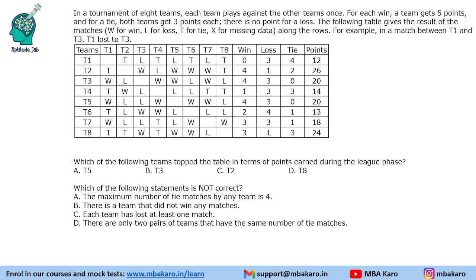Which team topped the table? Team 2 with 26 points. Which statement is not correct? Statement 1: maximum tie matches by any team is 4 — true. Statement 2: there is a team that did not win any matches (Team 1) — true. Statement 3: each team lost at least 1 match — true. Statement 4: there are only 2 pairs of teams with the same number of tie matches — false, because there are actually 3 such pairs. Hence statement 4 is the false statement.